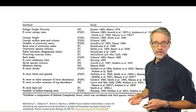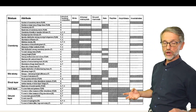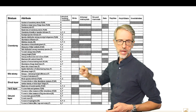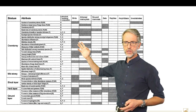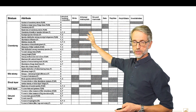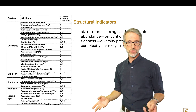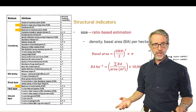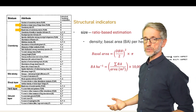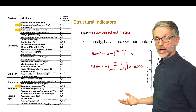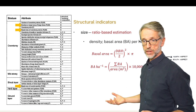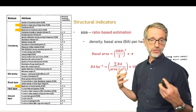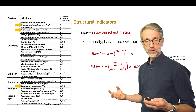We can see the types of structural attributes and their association with different fauna components. For example, looking at structural indicators associated with the size of individual trees, we can see that the number or basal area of large trees, the basal area of overstory stems, or the basal area of acacia species can be used as a structural indicator for fauna composition and abundance.